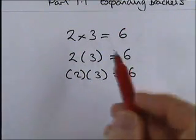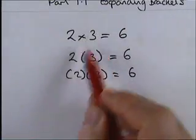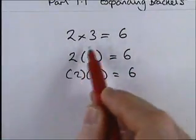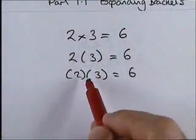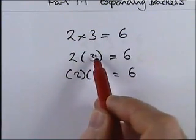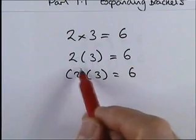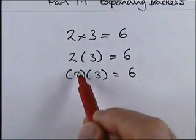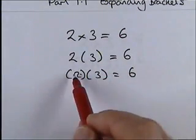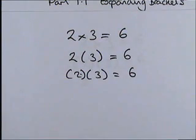Because what that's saying is we've got 2 lots of the number 3, or we've got 2 of everything inside this bracket. Well, in this case the bracket is 3, so we've got 2 lots of that 3 which is 6. Or we've got everything in this bracket multiplied by everything in this bracket. Well, 2 times by 3 is also 6.